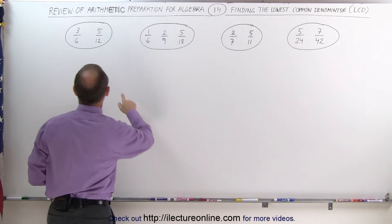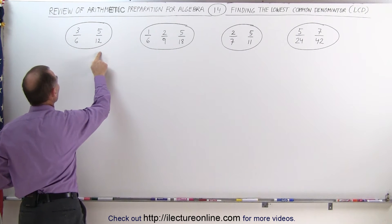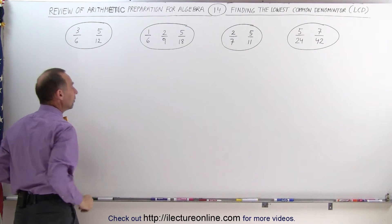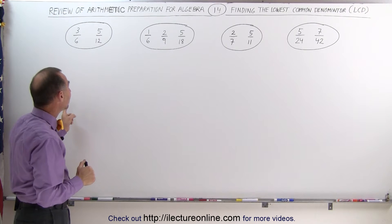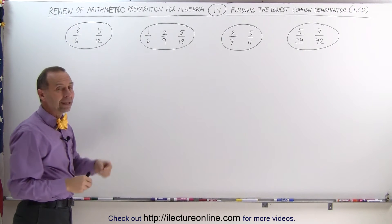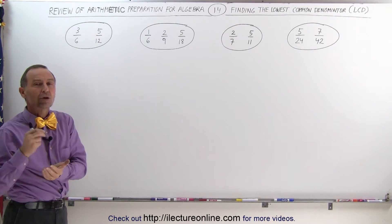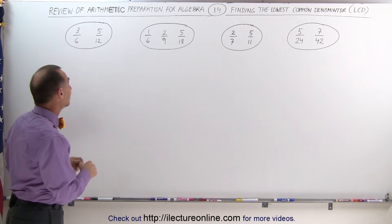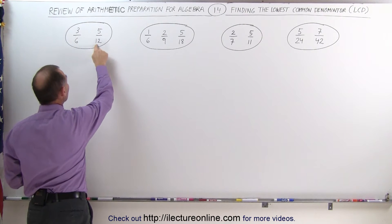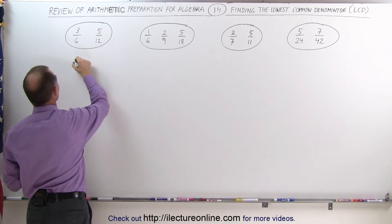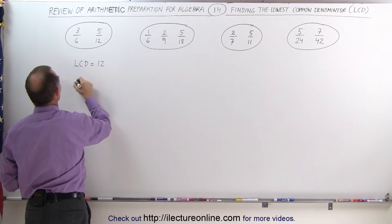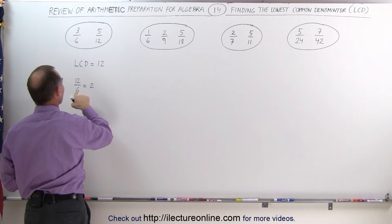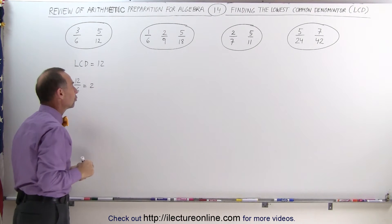For example, if we look at these two denominators, notice that 6 fits evenly into 12. If all the other denominators fit evenly into the largest denominator, then the largest denominator becomes the lowest common denominator. In this case, since 6 fits evenly into 12, the LCD is equal to 12 — because 12 divided by 6 is equal to 2, which is an integer number. That means 6 fits evenly into 12.